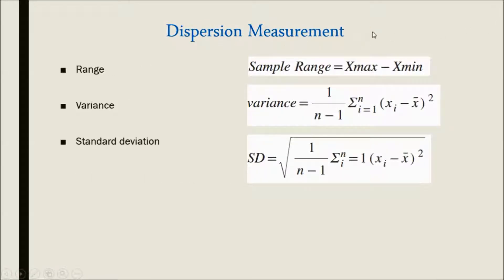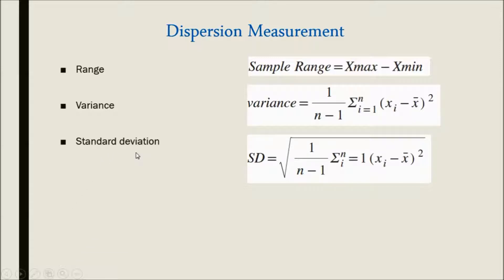For dispersion measurement we have range, variance, and standard deviation. Sample range = x_max − x_min, giving the spread of the data. Variance is calculated as (1/(n−1)) * Σ(xi − x-bar)². Standard deviation is the square root of the variance. All these values can be calculated using Scilab.